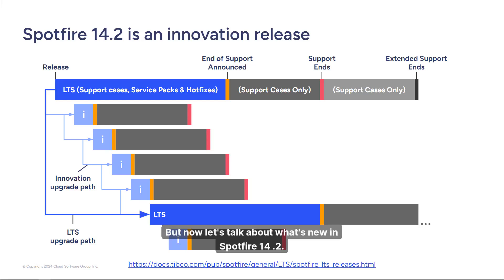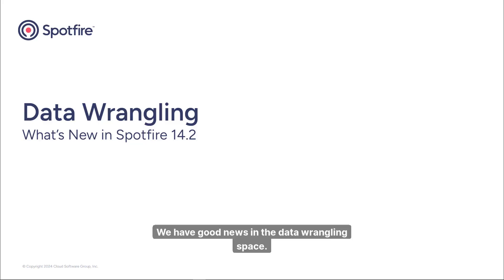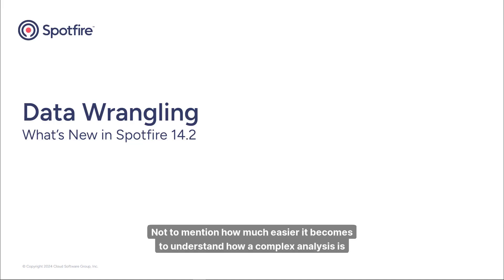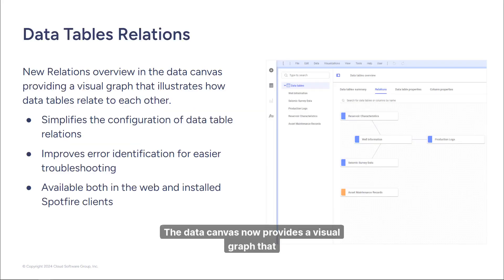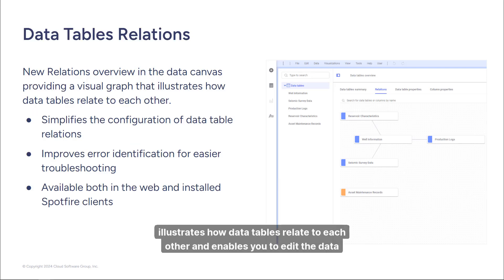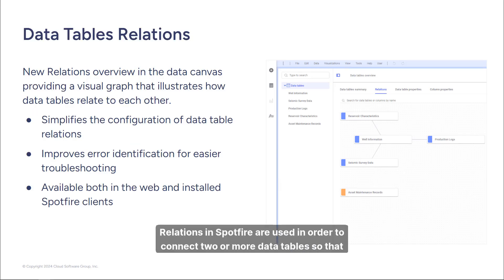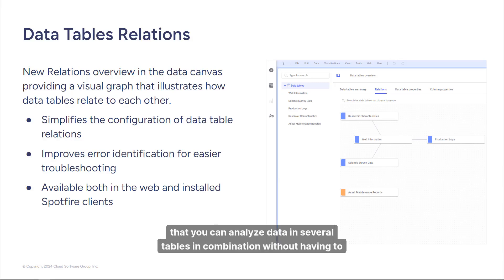We have good news in the data wrangling space. We are introducing a new graphical view and editor of the relations between data tables in Spotfire that makes it easier to analyze data in multiple data tables, and much easier to understand how a complex analysis is set up. The data canvas now provides a visual graph illustrating how data tables relate to each other and enables you to edit those relations. Relations in Spotfire connect two or more data tables so that marking, filtering, and drill-down work between them, allowing you to analyze data across several tables without physically joining them.